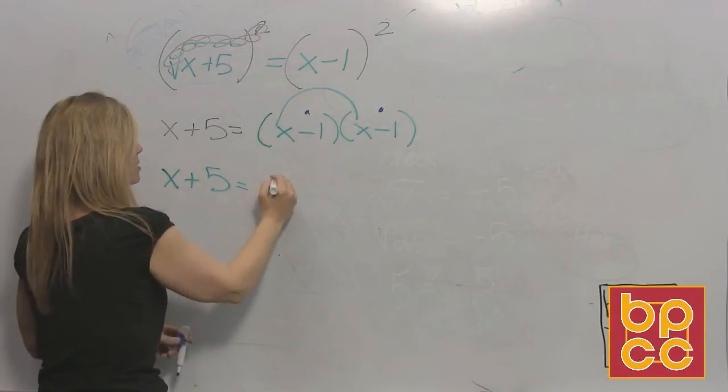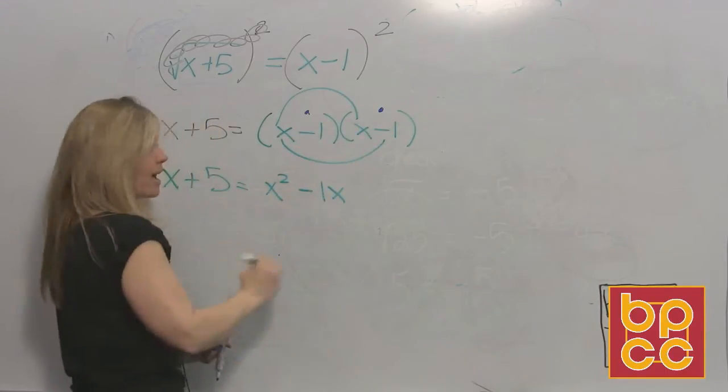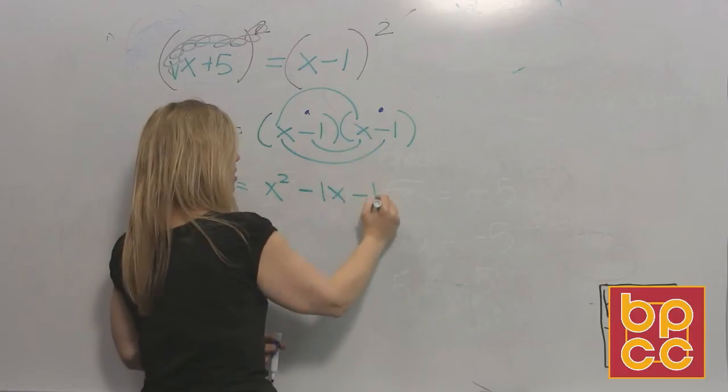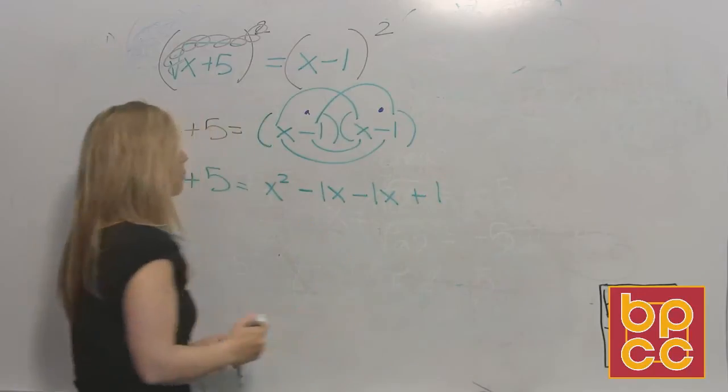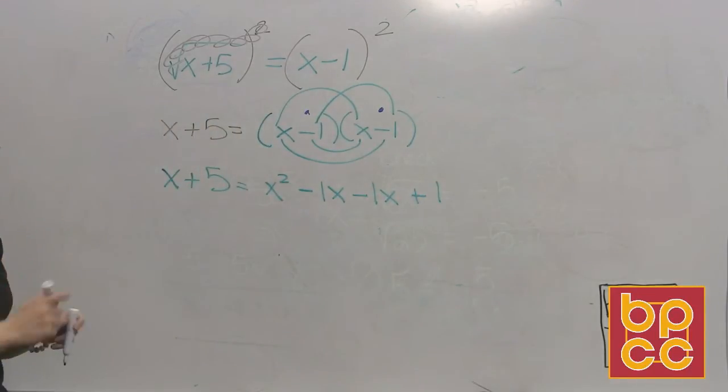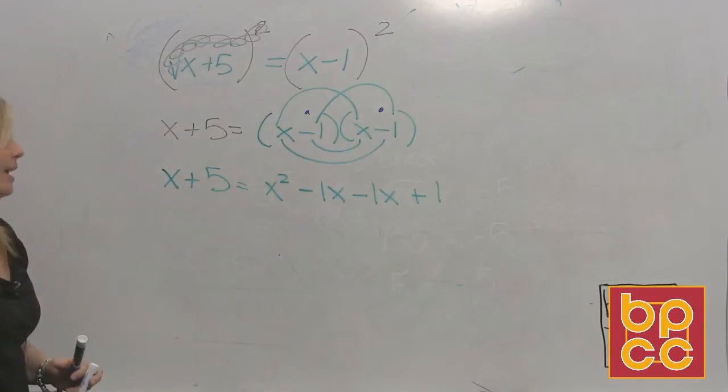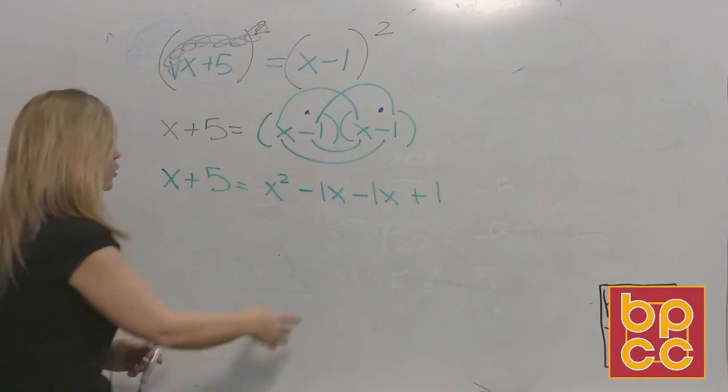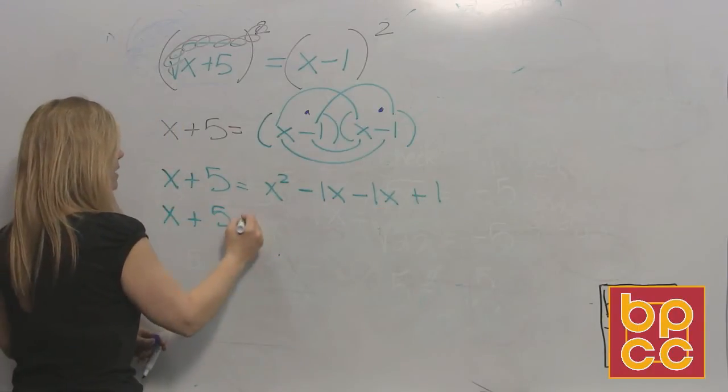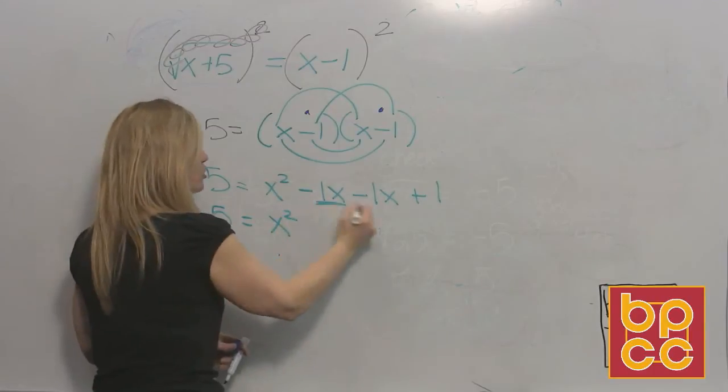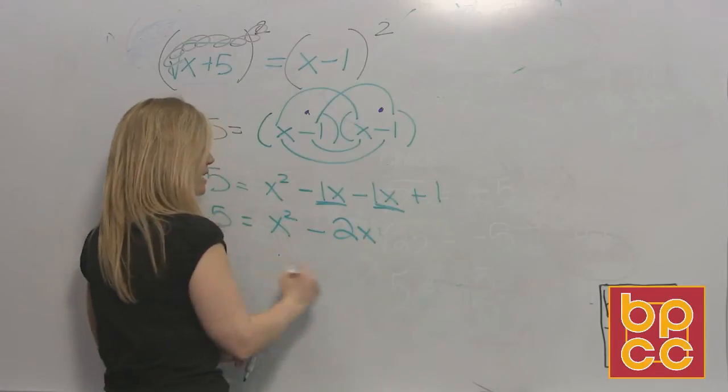That's where y'all are going to mess up. The left side you leave alone. And now we're going to do foil. First, x times x, x squared. Outers, x times negative one, negative one x. Inners, negative one times x, negative one x. Last, negative one times negative one, plus one. So here we are using something from chapter 12. Learned long ago. We know when we do foil, we have like terms. We have to put them together. So we have x plus five equals x squared. These are both negative. They don't cancel. You add them. A negative one and a negative one is a negative two x, plus one.